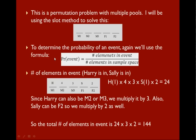To determine probability, we're going to again use this formula. First, we determine the numerator, which is the number of elements in the event. The event is Harry's in and Sally's in. So Harry fills male role 1, two other males fill the other two roles, Sally fills female role 1, and another female fills female role 2.